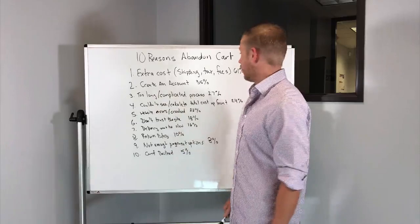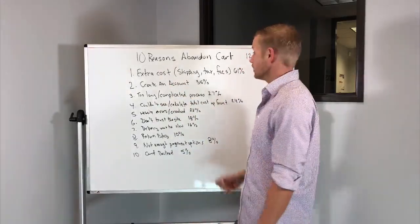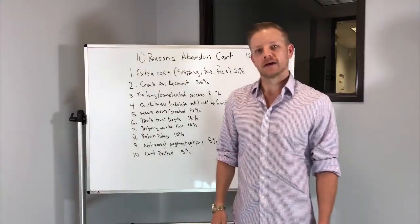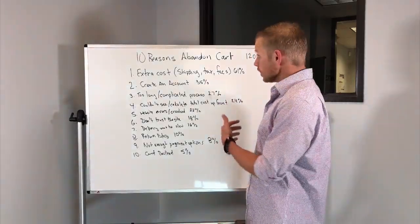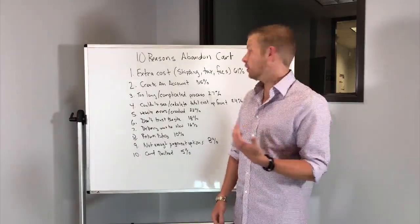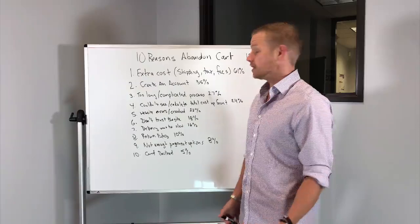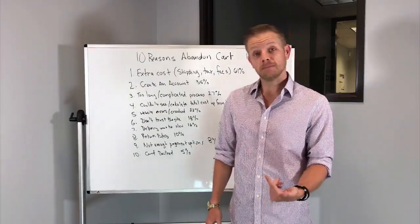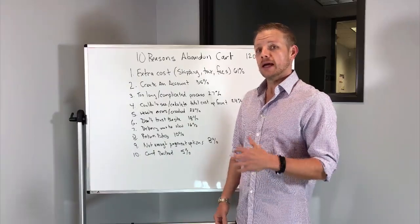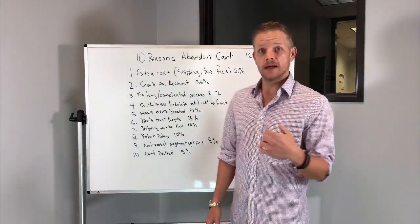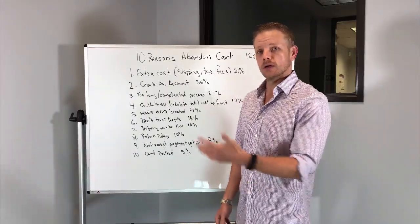Number one out of the 1,200 at 61% basically said there were extra costs such as shipping, tax, and fees. Some things you can do are highlight what the tax and fees might be earlier on in the process. You can leverage free shipping as well as test things like free shipping threshold and upgraded shipping.